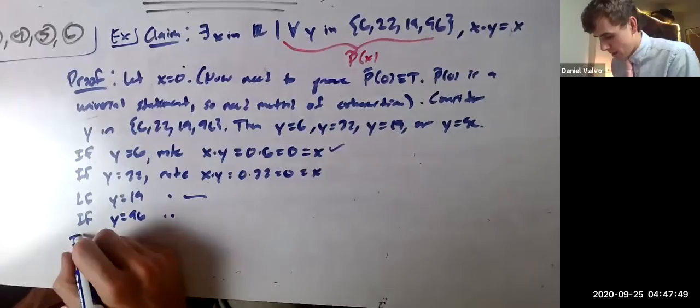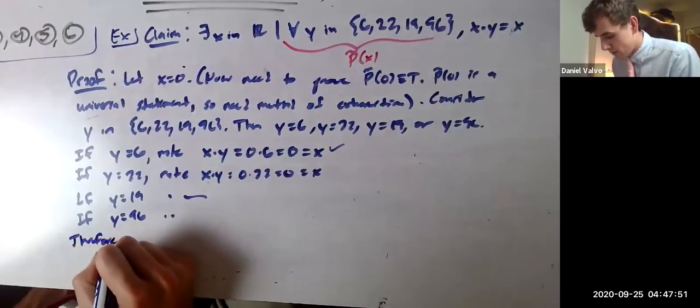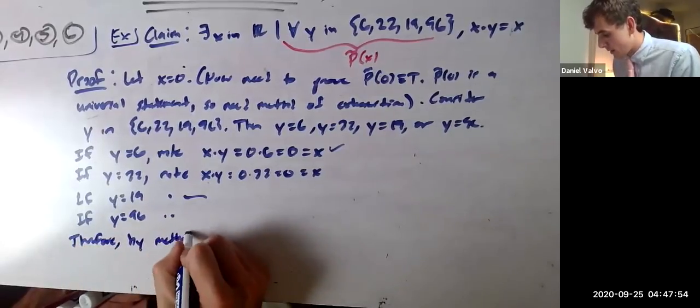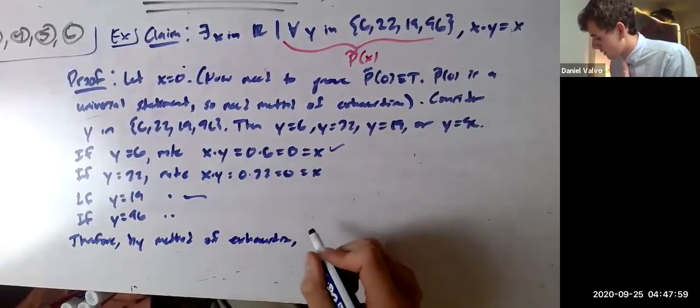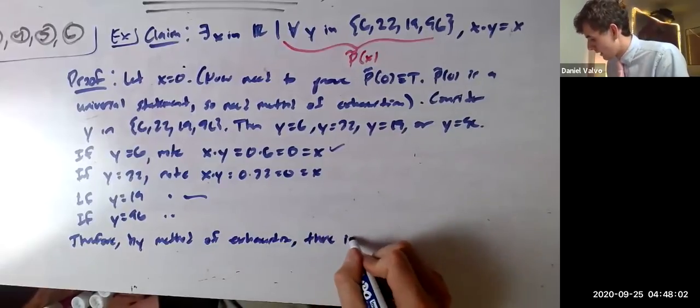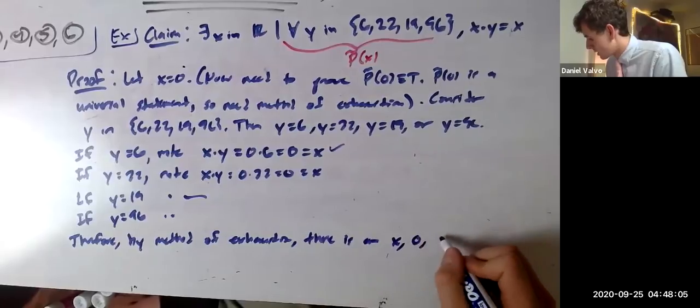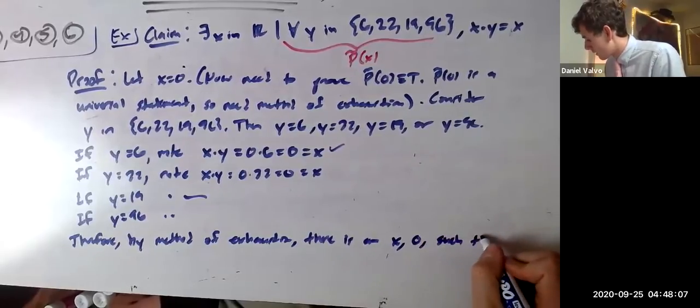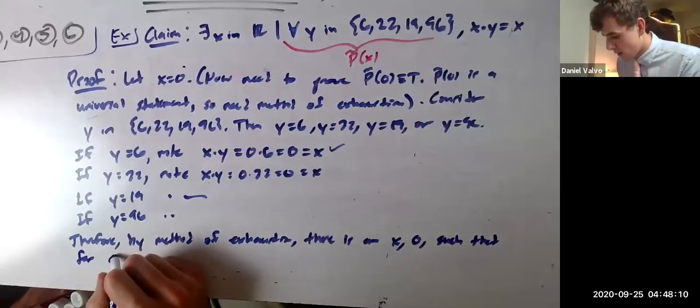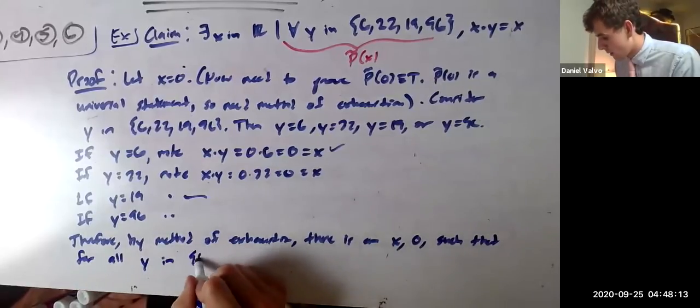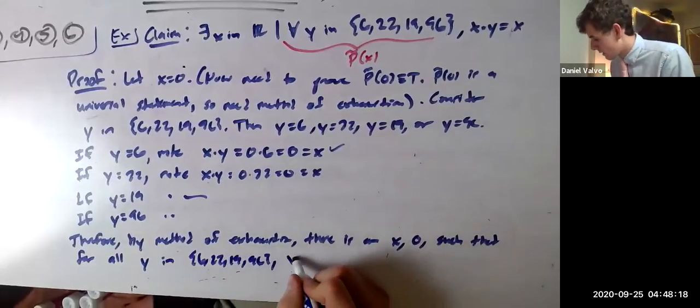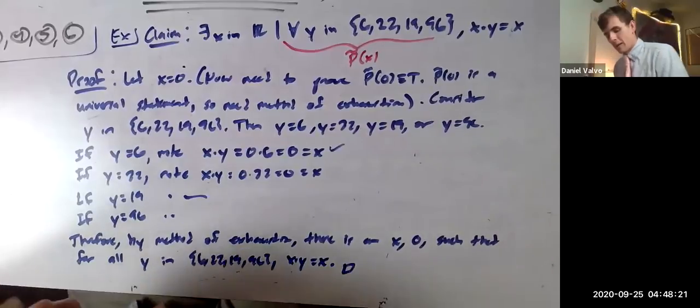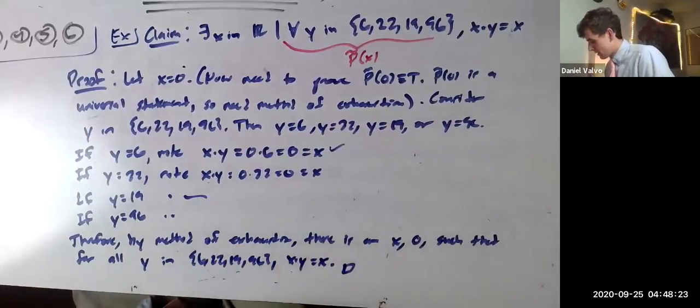So you have to write it all out, but I'll just say it sometime. Therefore, by method of exhaustion, there is an x, 0, such that for all y in {6, 22, 19, 96}, x times y equals x. Done. Make sense?